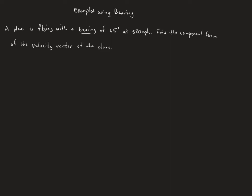In this video we're going to talk about some examples that use bearing and this whole idea of direction angles and resolving a vector into its components. Imagine there's a plane flying with a bearing of 65 degrees at 500 miles per hour, and what we want to do is find the component form of the velocity vector.